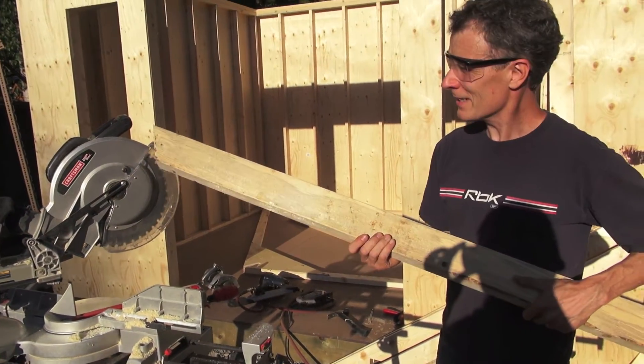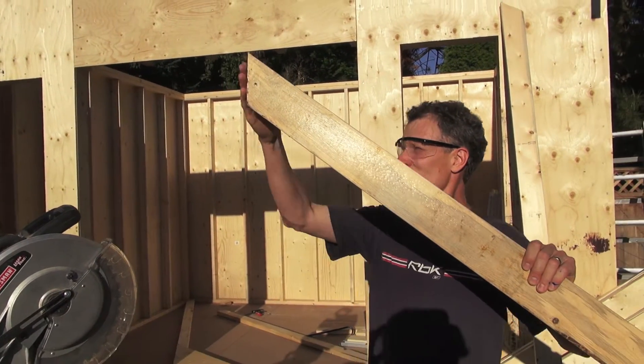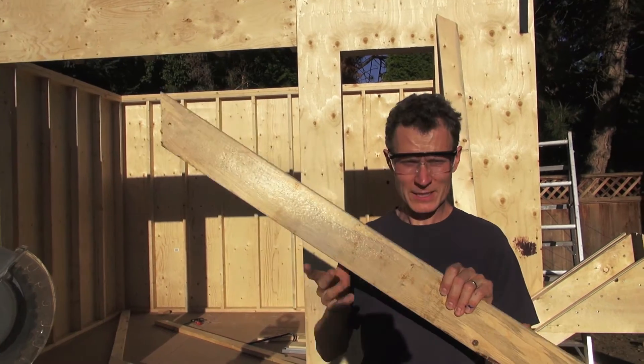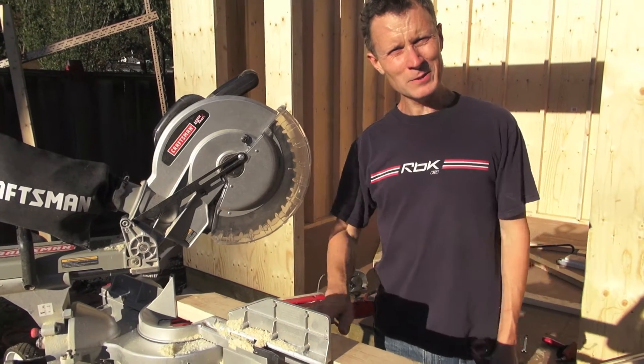So then you get that angle on there, and when you put it up at that slope that you want on the roof, it's going to be perfectly vertical attached to that ridge line. So that's using trig to find the angle in a roof.